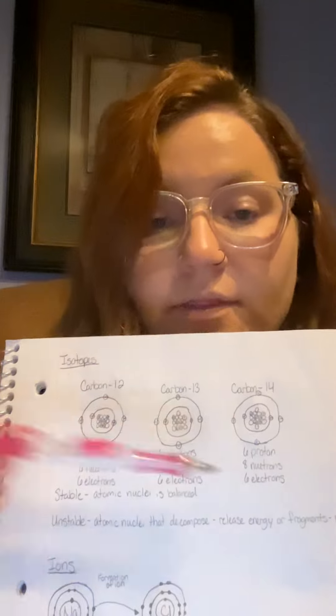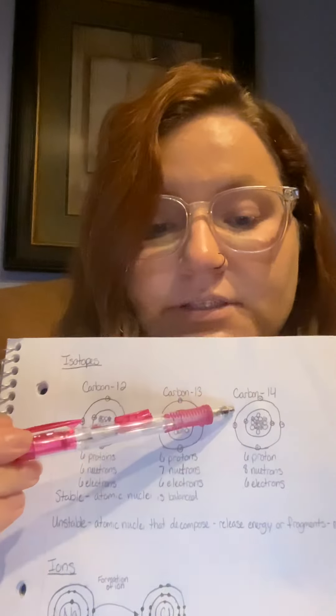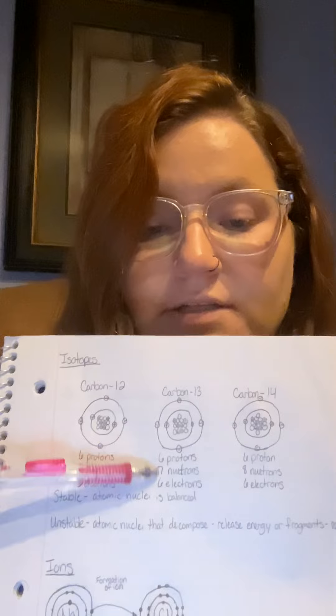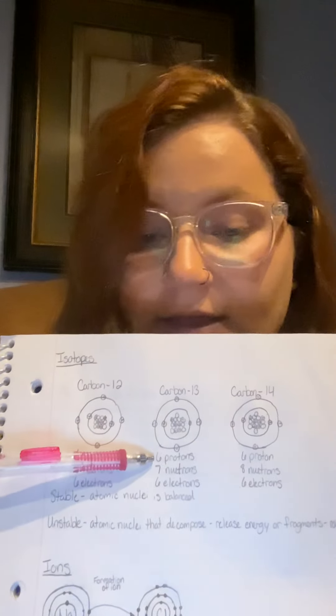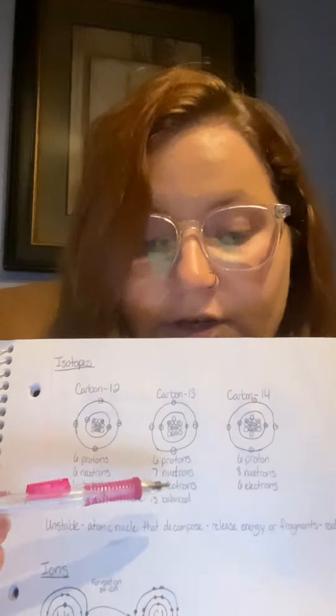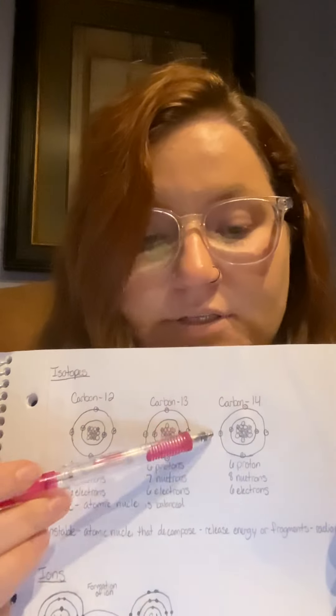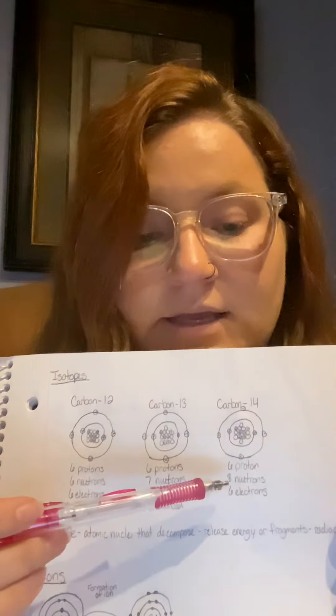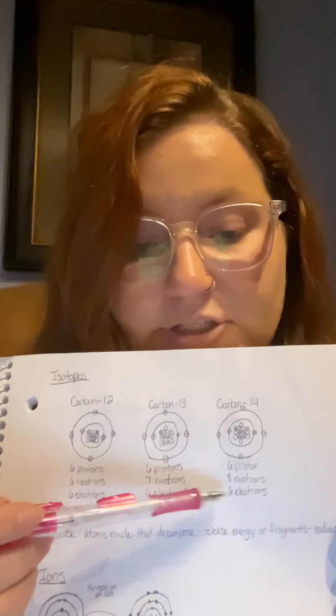With getting to the other isotopes of carbon-13 and carbon-14, again, we're adding neutrons. So with carbon-13, again, six and six for protons and electrons, seven neutrons. And then with carbon-14, six protons, eight neutrons, and six electrons.